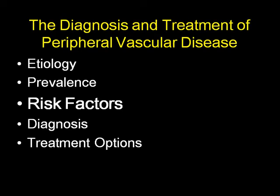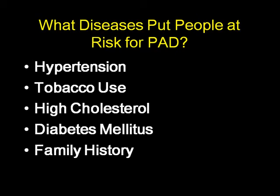Coming to risk factors — the most important correctable risk factor is smoking, which is predominantly the worst factor. Other modifiable risk factors include diabetes and hypertension. The most difficult subset of patients to treat are those who are smokers, diabetic, and have end-stage renal disease. If you have a patient on hemodialysis who is diabetic and comes in with an ulcer, you can be almost 90% sure that this patient may end up getting an amputation within the next two years.